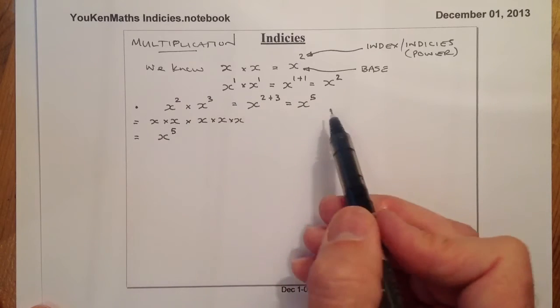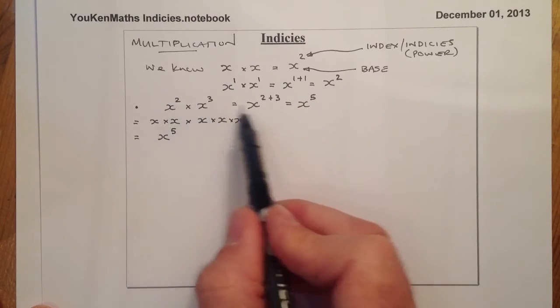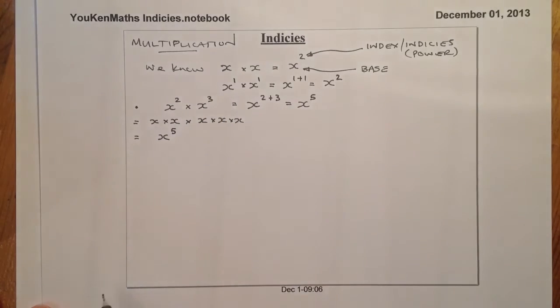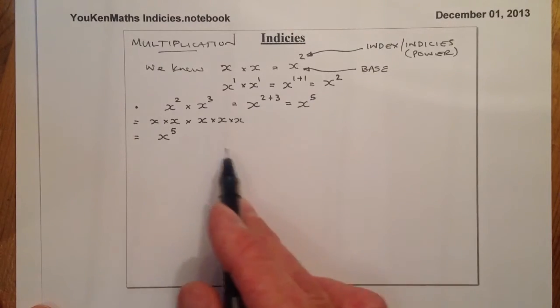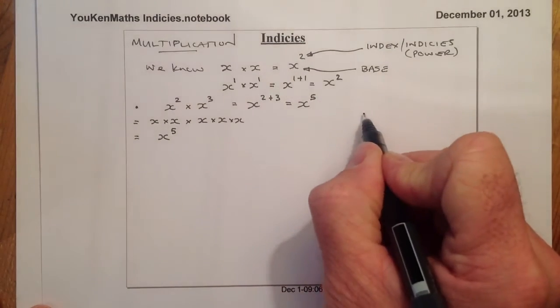So a different way to look at it. But generally when you're working with indices, this is the way that you'll be going forward. Can I get you to try a couple of questions? So I'm going to put a couple of questions down. First of all, I'll put down the law that we've just worked on there, or the rule.